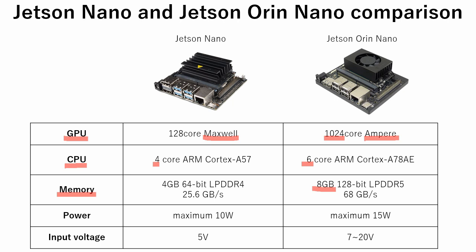Due to the upgrade of GPU and CPU performance, power consumption is increased by 1.5 times. This could be a problem for small robots with limited battery space or flying mechanisms with strict weight limitations. In Orin Nano, input voltage lies between 7 and 20 volts, meaning we can use 3-cell or 4-cell lithium polymer batteries directly.